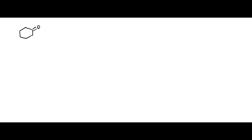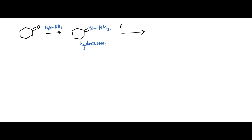As an example, consider cyclohexanone. On treatment with hydrazine, it forms a hydrazone. This hydrazone, upon heating with potassium tertiary butoxide as base and DMSO as solvent, changes the carbonyl into a methylene group with loss of N2 gas.